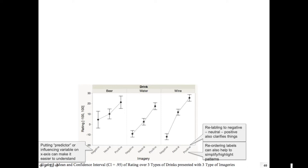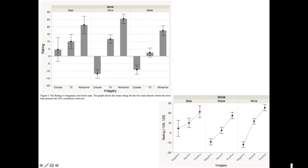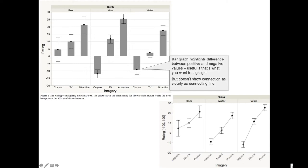Always check what order to put different conditions — for example, negative, neutral, positive makes sense in that order. Typically the predictor or independent variable is on the x-axis. If you have a baseline, bar graphs can really help show what is below or above baseline. The same data can give quite a different feeling depending on how you plot it.